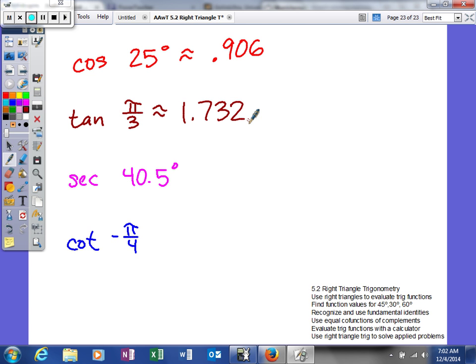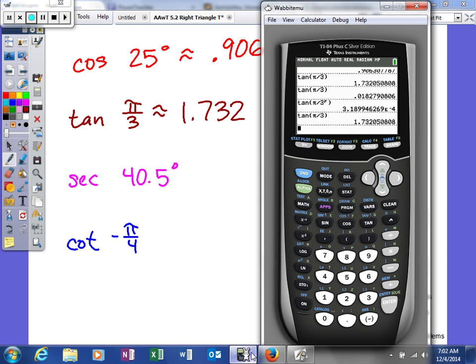Alright. Now we're getting into more difficult stuff. As you can see, we're trying to take the secant of 40.5 degrees. Now the only buttons on my calculator are sine, cosine, and tangent. And you have these little things above, but unfortunately those are not the other trig function values. So to be able to get this right, we need to use what we know about secant. And what you should know is that secant is the reciprocal of cosine.